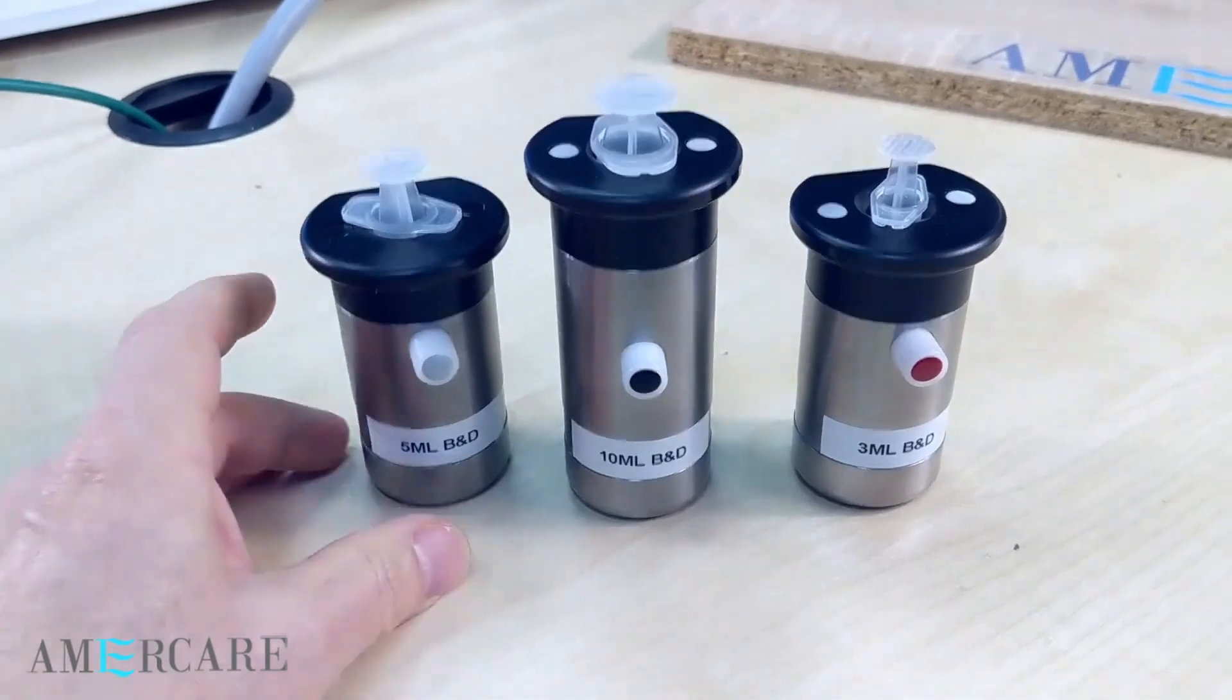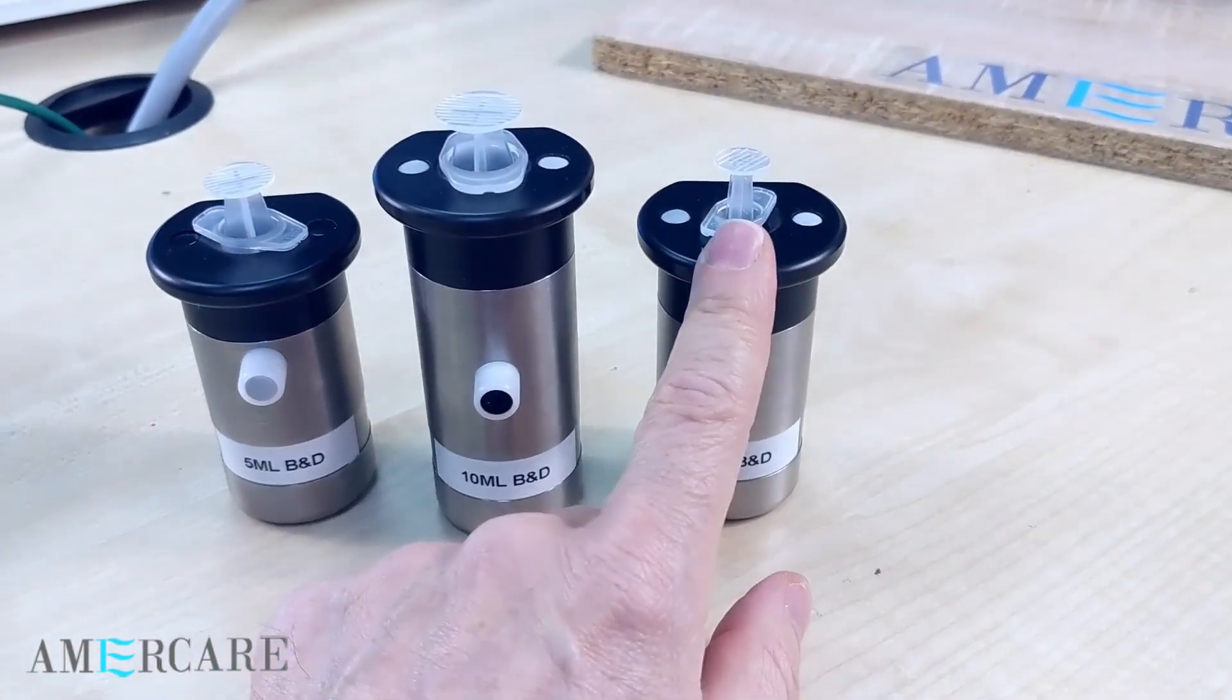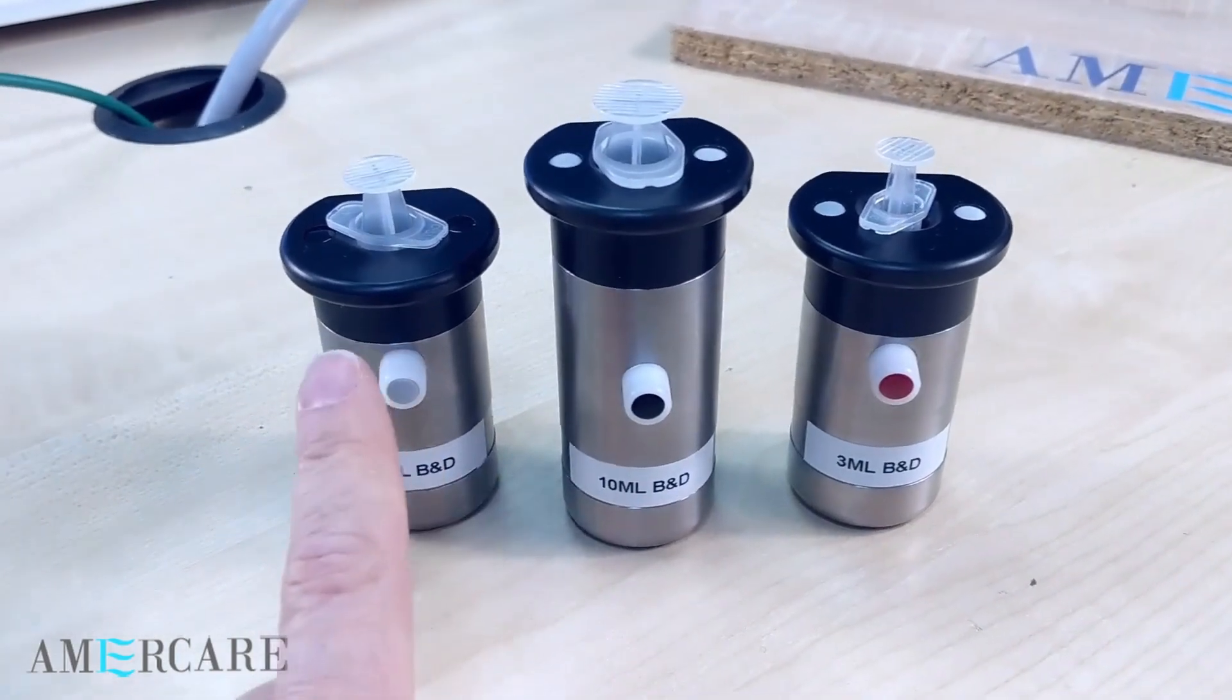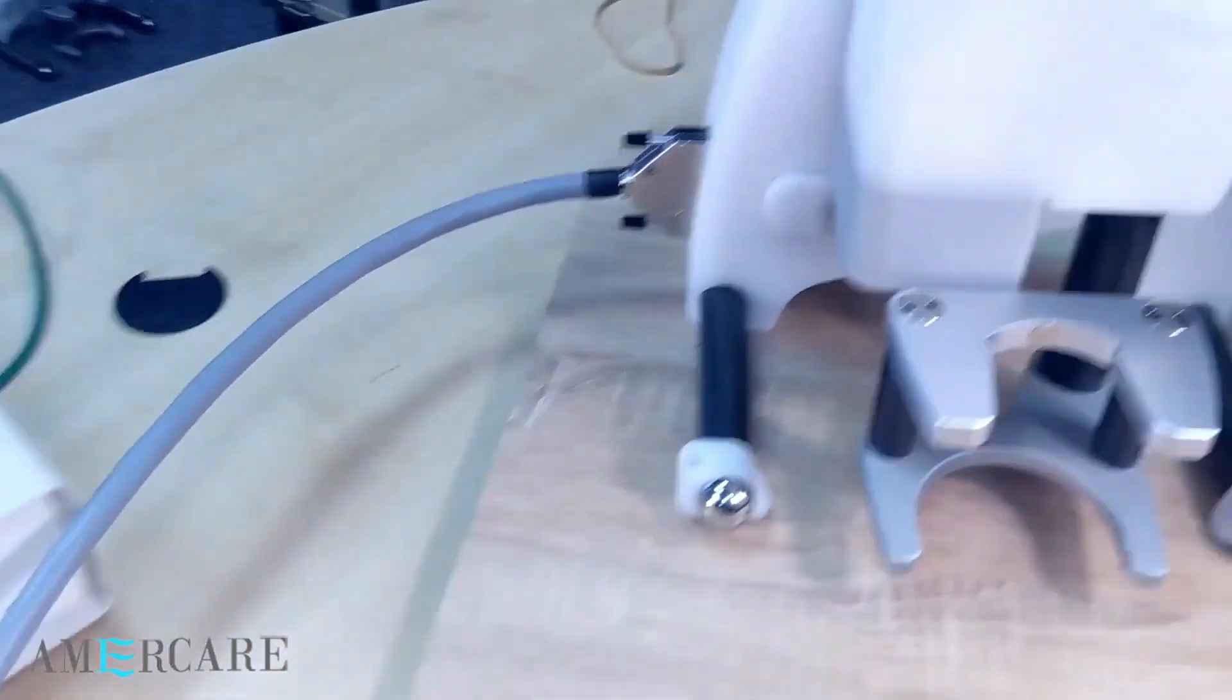The syringe shields shown here are for a 5mm BND, a 10mm BND and a 3mm BND. The front of each shield is fitted with a colored cap. This relates to the dial on the top of the unit.